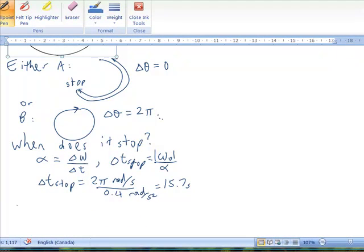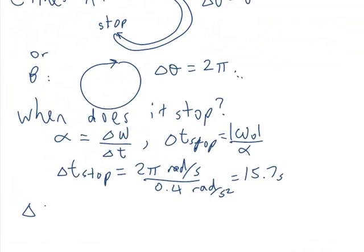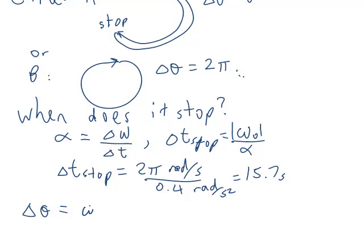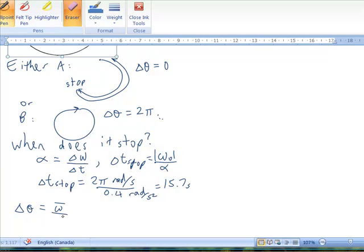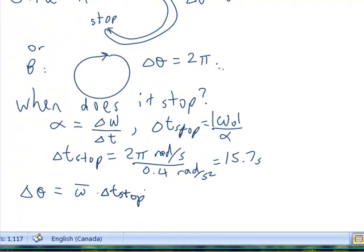How far will it go in that amount of time? Delta theta is going to be equal to your average velocity multiplied times your delta t, times delta t stop. Which will be your initial two pi radians per second plus 0 divided by 2. That's your average times this 15.7. And I got that that equals 24.6 radians.